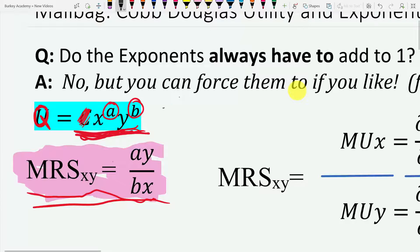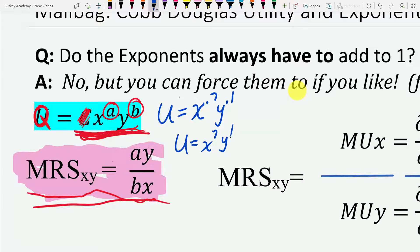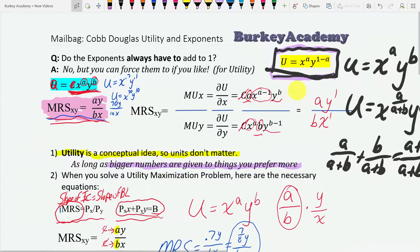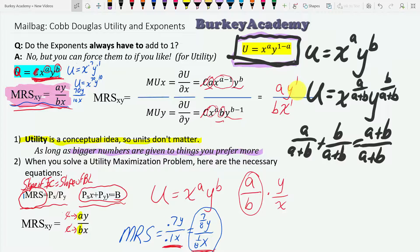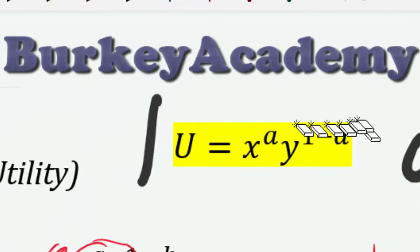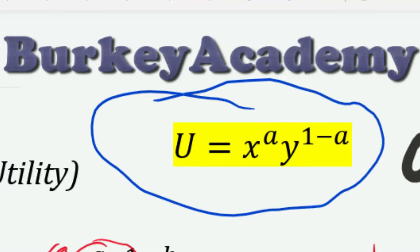Let me give one more example. For the utility function x^0.7 times y^0.1, there are many ways to write it — we could add any constant at the beginning. But also, u equals x^7 times y^1, or x^70 times y^10, will all result in exactly the same marginal rate of substitution. Because when you divide those exponents — 70y over 10x — you get the same ratio of 7 to 1. I hope this helps you understand why some textbooks and professors insist on writing utility functions in the simplest possible way, while others don't.